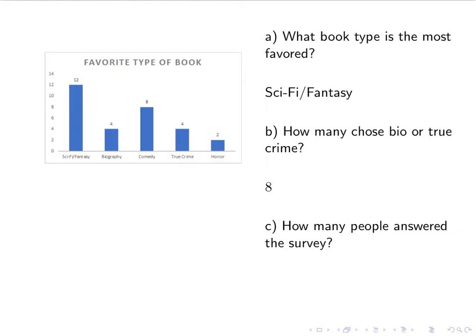How many people answered the survey? So we're going to assume here that everyone only picked one favorite type of book. So assuming that, I'm just going to add up my numbers: 12 plus four, plus eight, plus four, plus two, and that should give me a really nice 30.